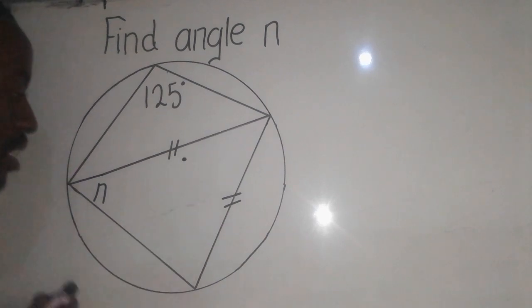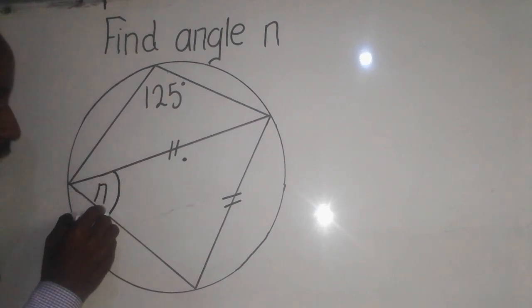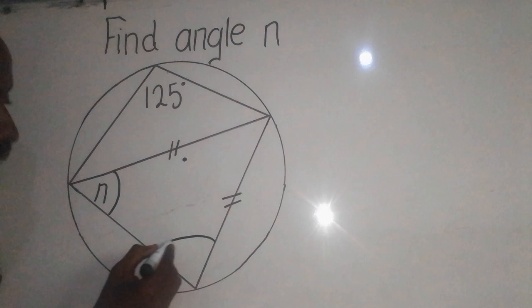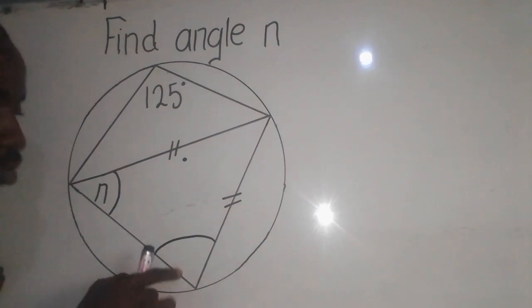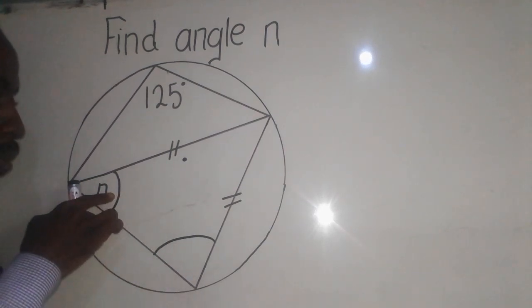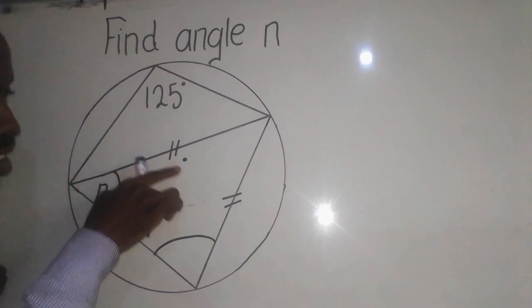This simply means that the angle which is here is also equal to the angle which is there, meaning that the angles are equal because of these two lines which you are seeing here.